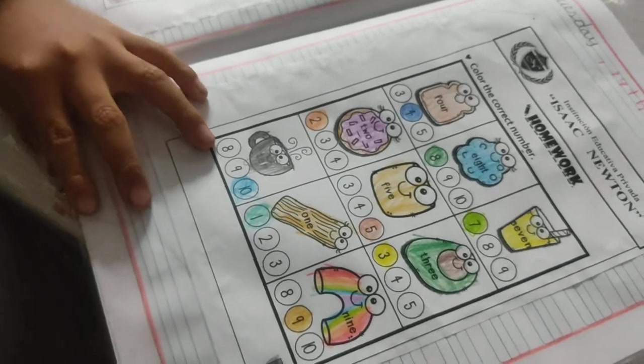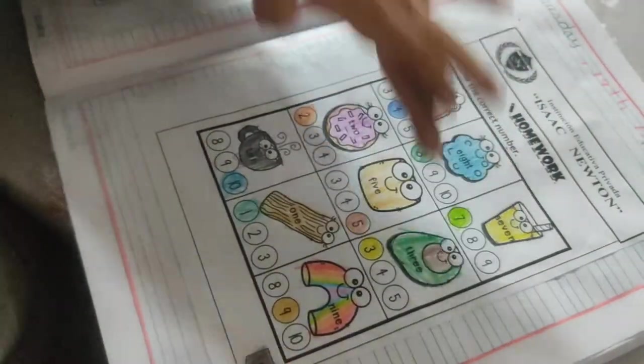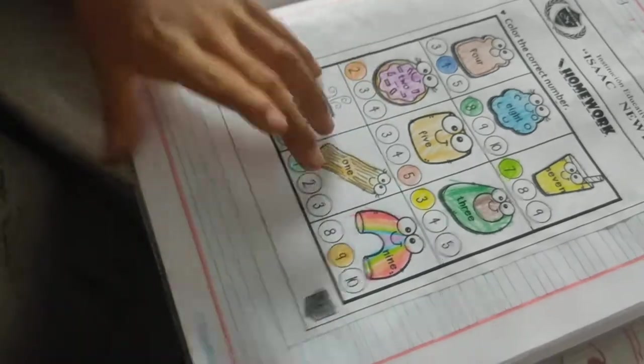Call the correct number. Four, eight, seven, two, five, three, ten, one, nine.